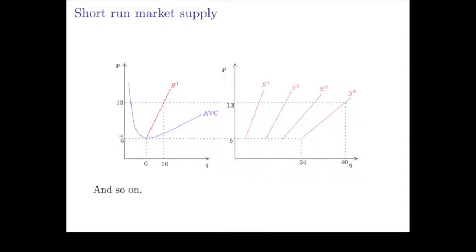So if you have the price 5, if you had n firms you'd have n times 6. And at the price 13 to the n 10 quantity, you'd have n times 10. So in this case, for example, for 4 you'd have 24 and 40 as a quantity supplied.